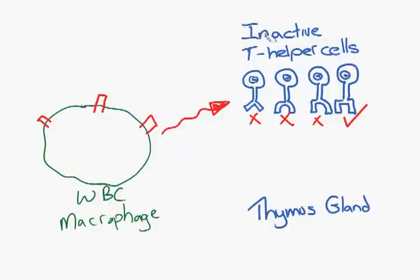So we now have one active T helper cell. This T helper cell will now be triggered to clone and clone and be released into the blood.